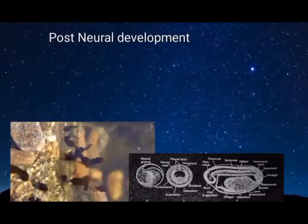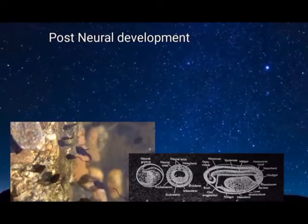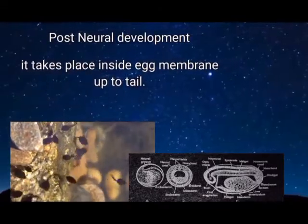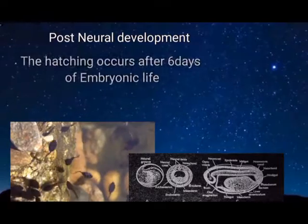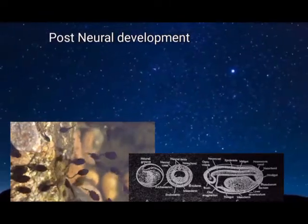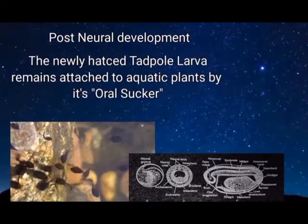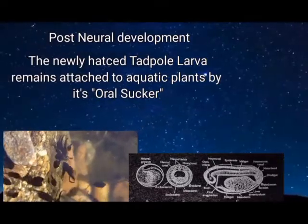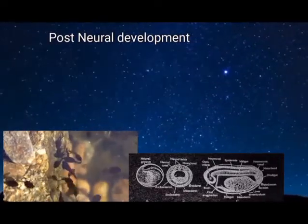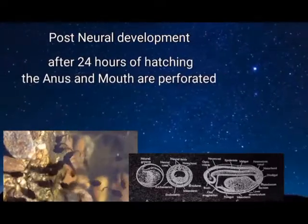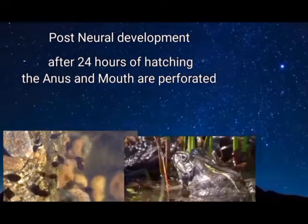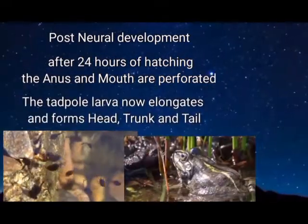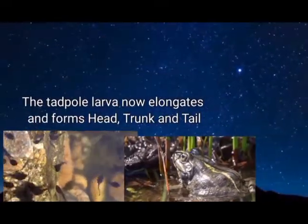Post-neural development takes place inside the egg membrane up to the tadpole stage. Hatching occurs after six days of embryonic life. The newly hatched tadpole larva remains attached to aquatic plants by its oral sucker. After 24 hours of hatching, the anus and mouth are perforated. The tadpole larva then elongates and forms the head, trunk, and tail.